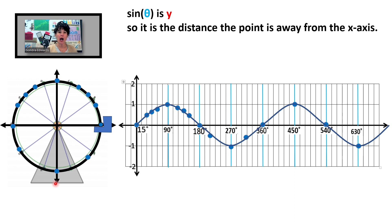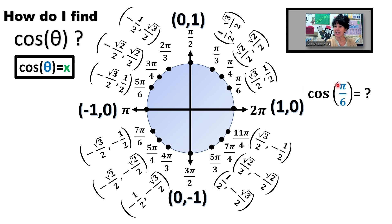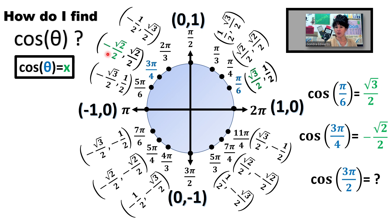So just remember: sine is the y-coordinate. Evaluating cosine of theta — the answer to cosine of theta is the x-coordinate. For example, cosine of π/6: go to π/6, the answer is the x-coordinate, which is √3/2. Cosine of 3π/4: go to 3π/4, the x-coordinate is −√2/2. And cosine of 3π/2: go to 3π/2, the x-coordinate is 0, so cosine of 3π/2 is 0.